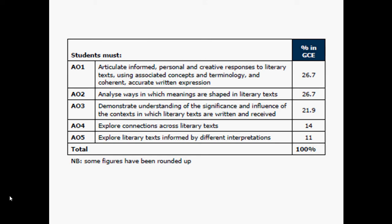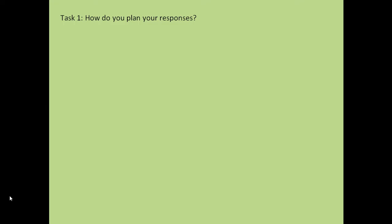AO1 is your ability to create a solid argument using terminology all the way through. AO2 is your ability to use form, structure, and language to support your ideas. AO3 is your ability to link context to what you're saying. AO5 is to explore different interpretations by different writers. Notice we're not being asked to compare for Section A. This page is a breakdown of how the assessment objectives are weighted across your course.